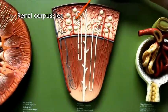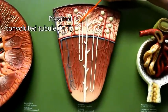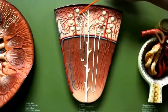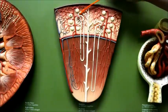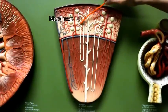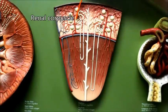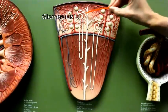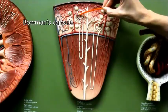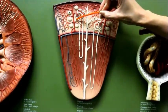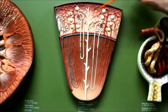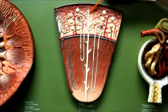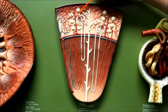The renal corpuscle is part of the nephron. The other parts are the proximal convoluted tubule, the loop of Henle, and the distal convoluted tubule. The renal corpuscle is composed of two structures: blood vessels called the glomerulus, and the Bowman's capsule. The Bowman's capsule is connected to the proximal convoluted tubule. The collecting duct connects to the nephron at the distal convoluted tubule.